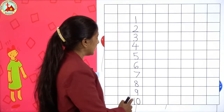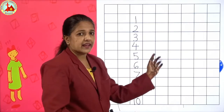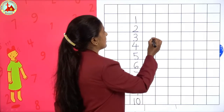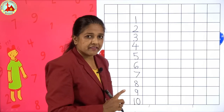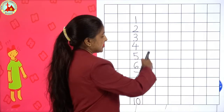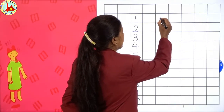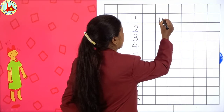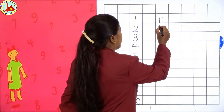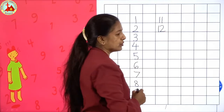Now after finishing this line, you have to leave one line and then start the other line. After 10, write 11. So 11 you will start writing after leaving one line. So from here we will write 1-1, 11. After 11, 12: 1-2, 12.